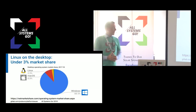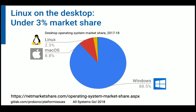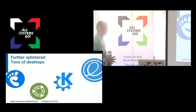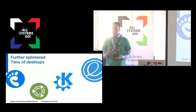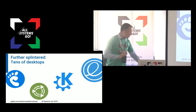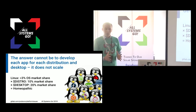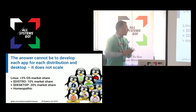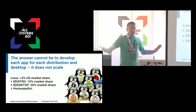Linux on the desktop is really a very niche operating system, and we need to keep this in mind. We have less than three percent of market share for all of Linux together on the desktop — it's really dominated still by Windows and macOS. But it gets worse: these under three percent are splintered across hundreds if not thousands of different distributions, which don't agree on many things. There are also at least tens of different desktops. If you do a simple multiplication — three percent times your distribution of choice times your desktop of choice — your market share is gone. This does not scale.